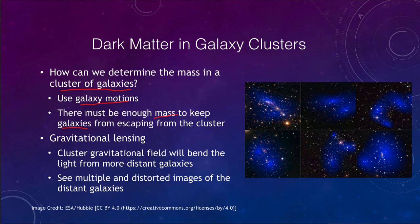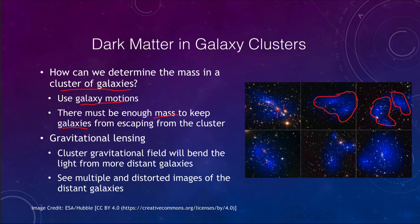Without sufficient mass, galaxies would just be spread out all over the universe. We can use their motions to estimate what the dark matter distribution has to be like in order to keep the clusters together. Because if we go just by the galaxies that we see and add up their mass, there is nowhere near enough — those galaxies would very quickly on astronomical timescales spread out over the universe.